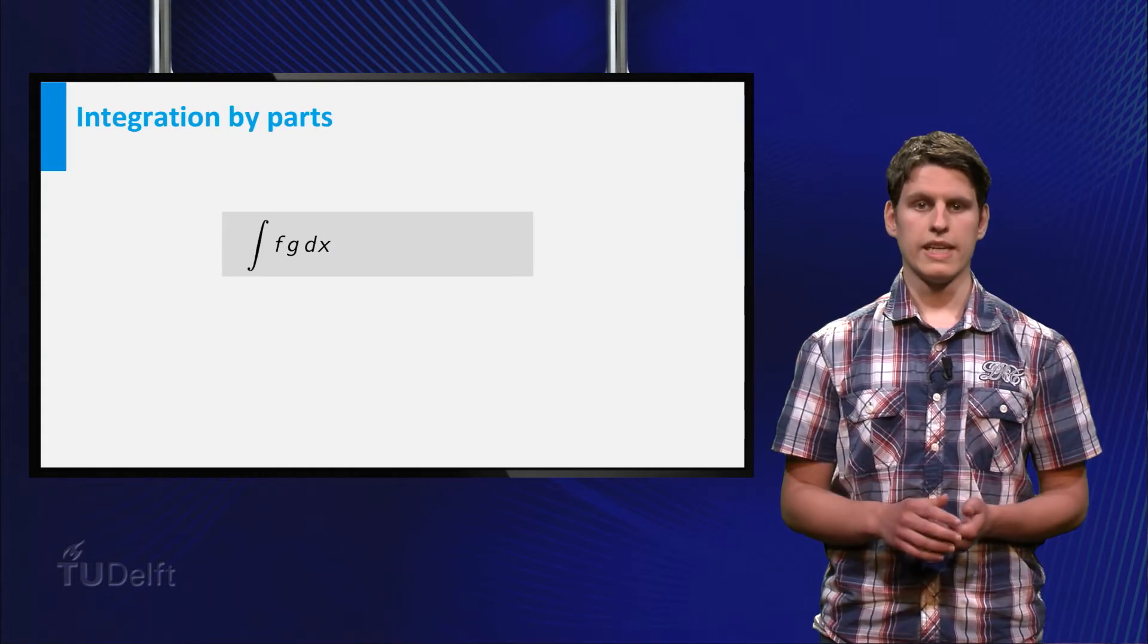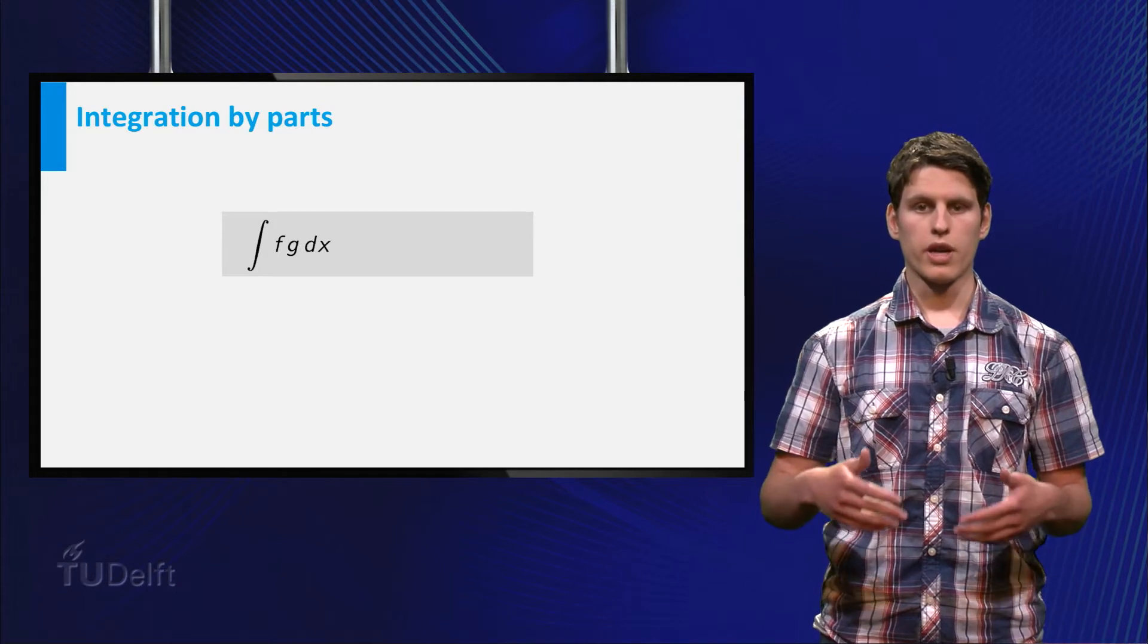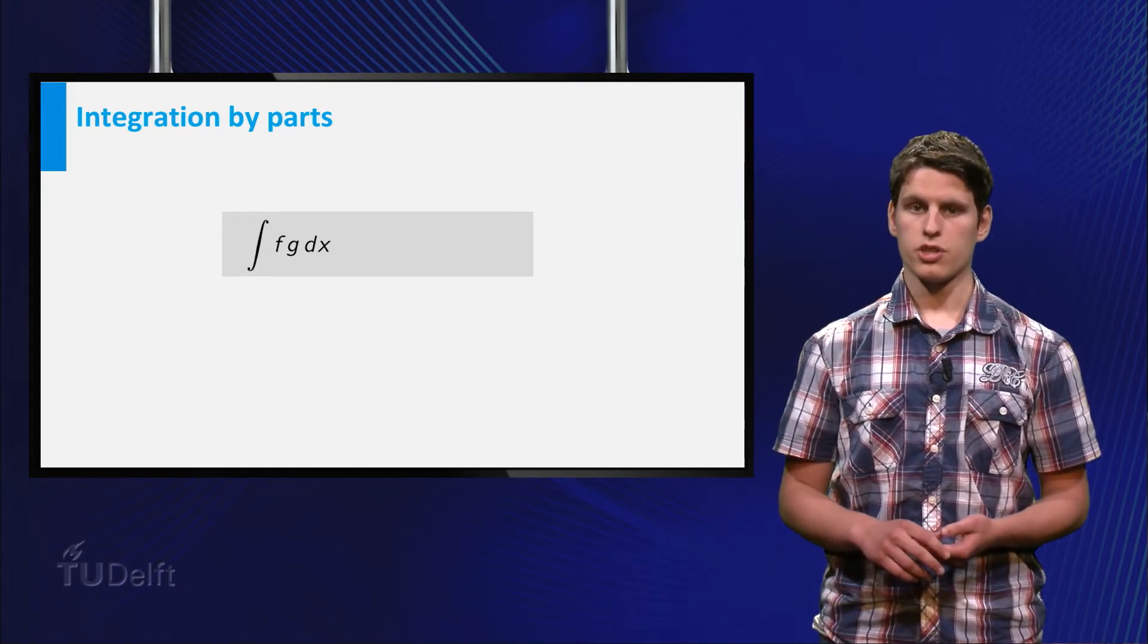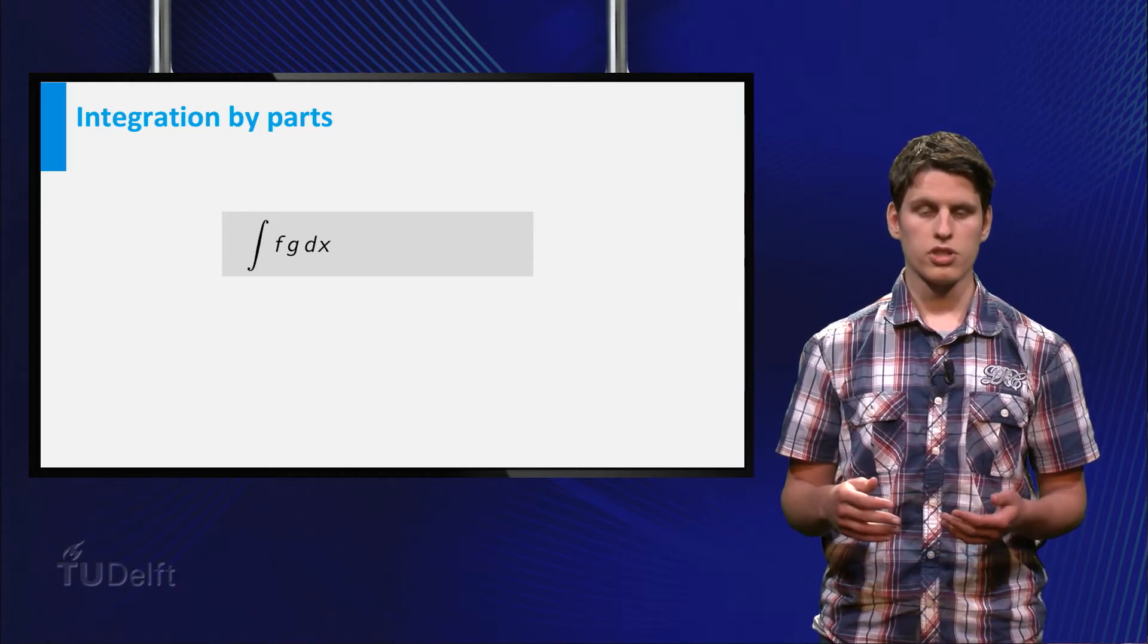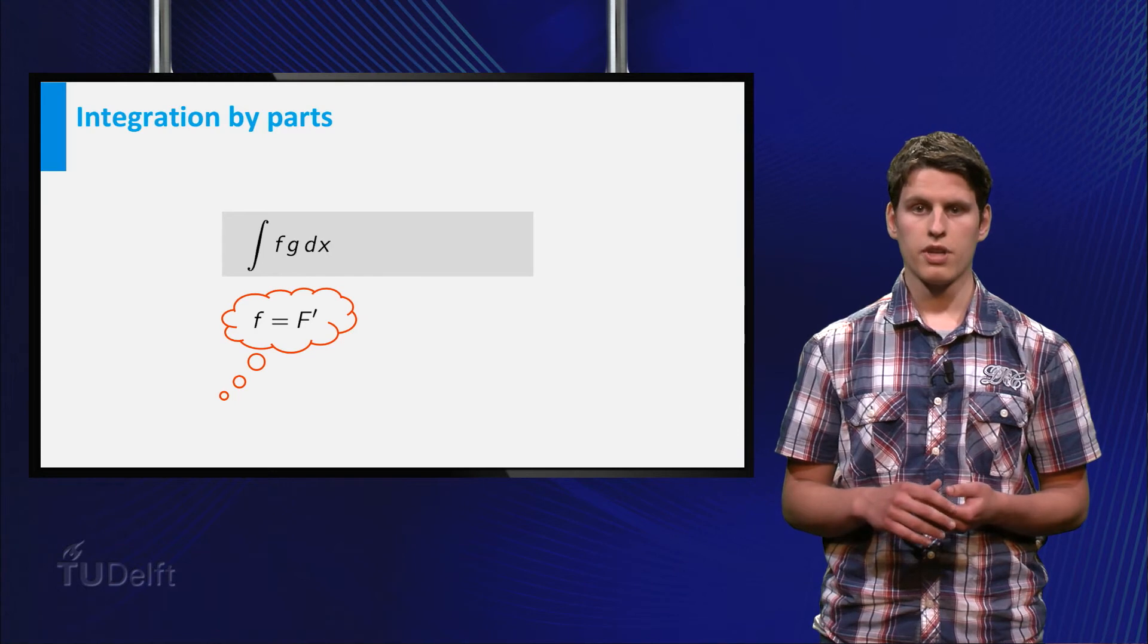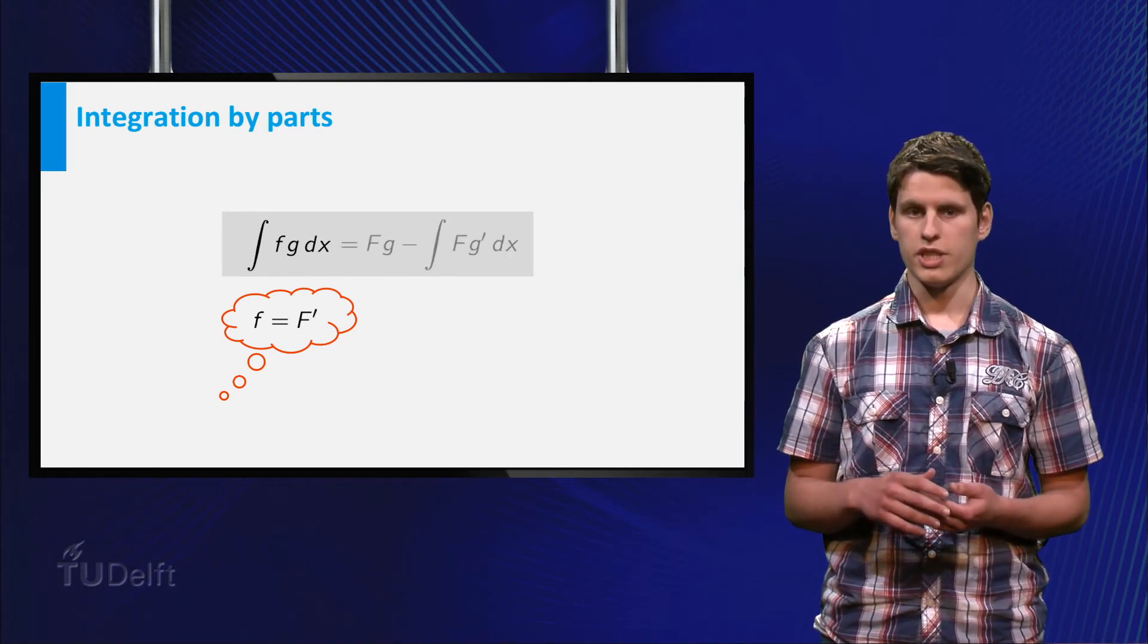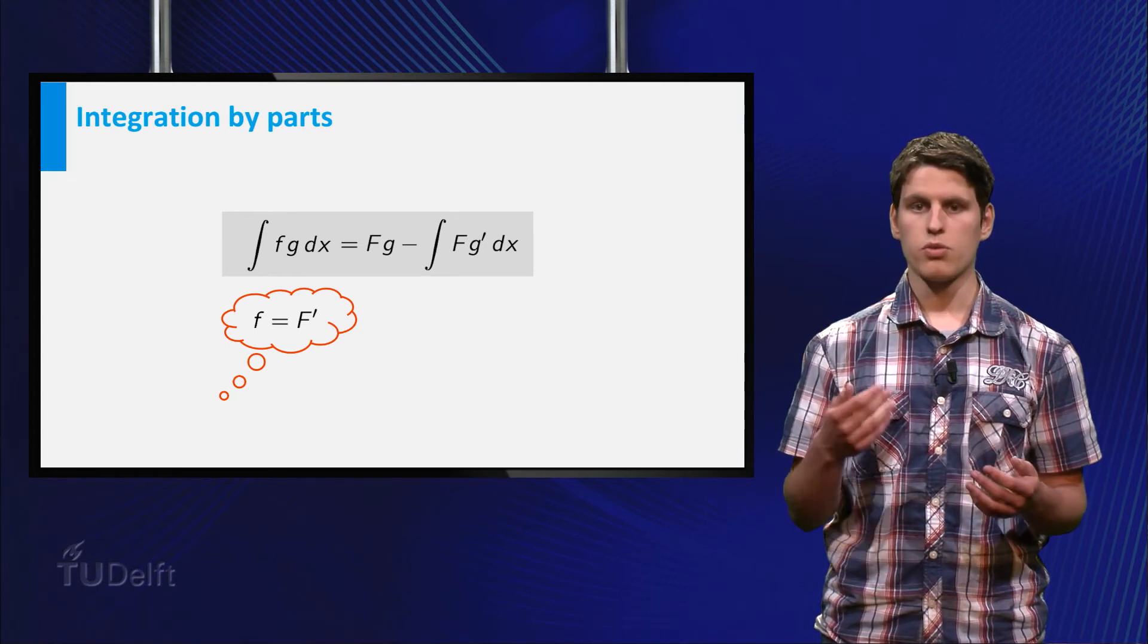Another integration technique that we have seen is integration by parts. You can use it to find an antiderivative of a product of functions. It works as follows. Suppose we want to integrate the product of functions f and g. Suppose that capital F is a primitive function for small f, then the integral is equal to capital F times g minus the integral from capital F times the derivative of g.